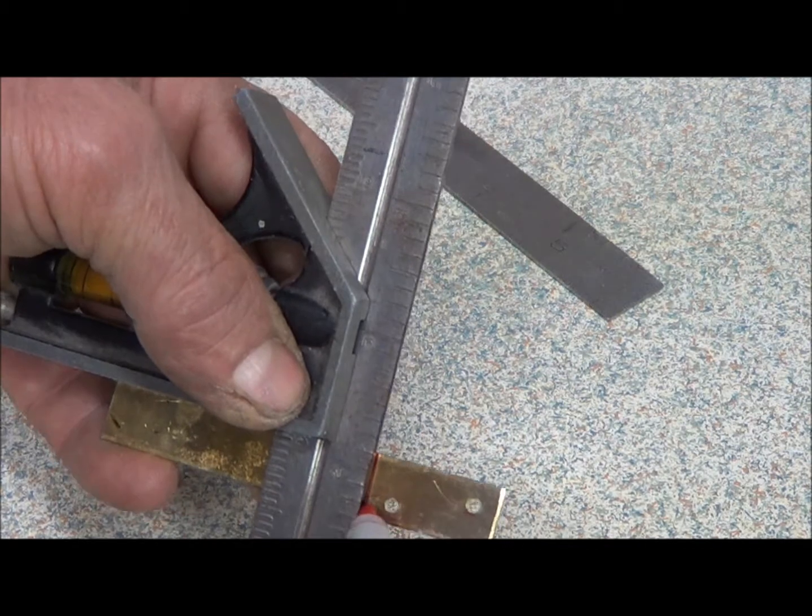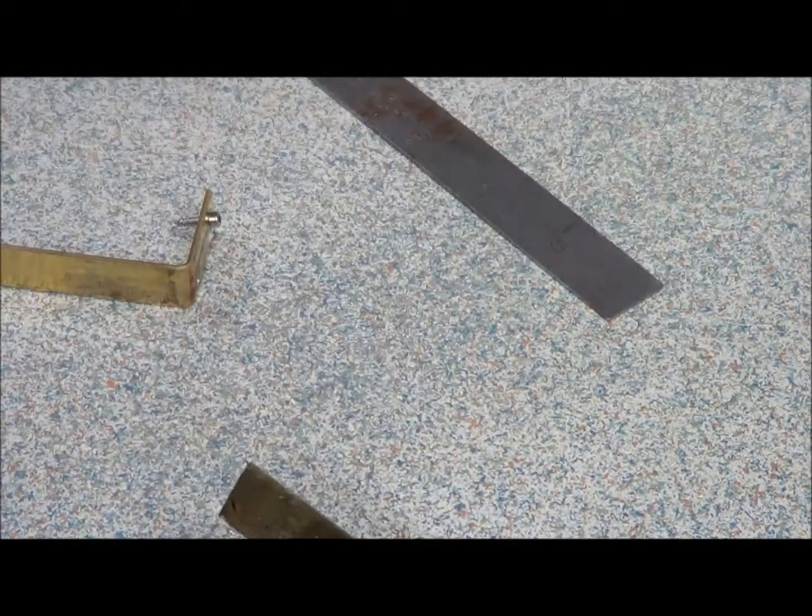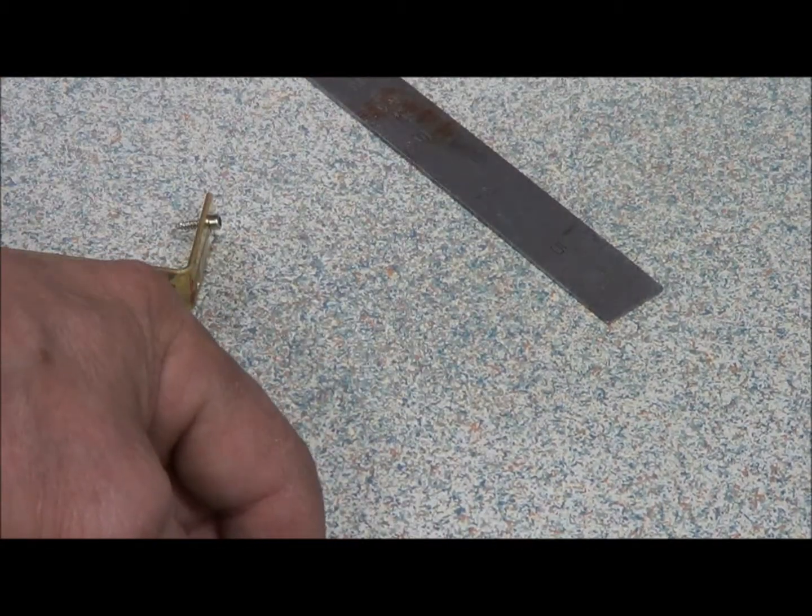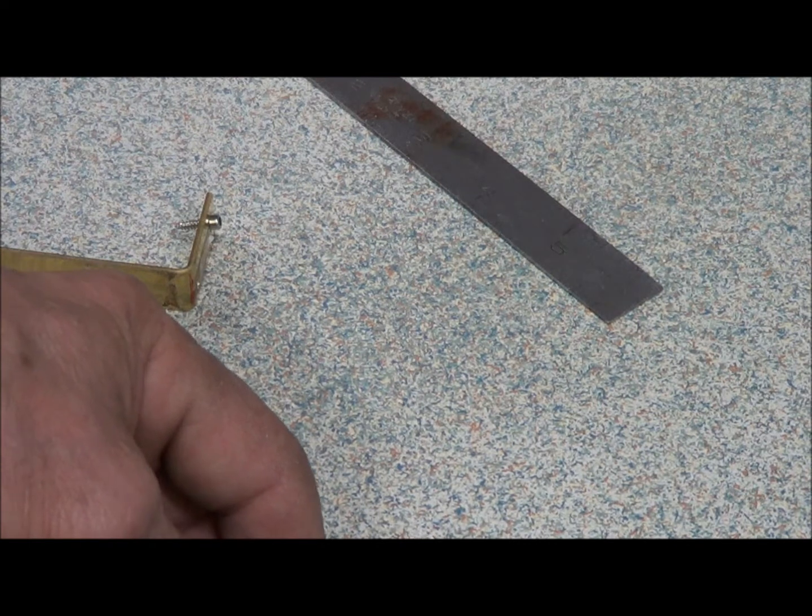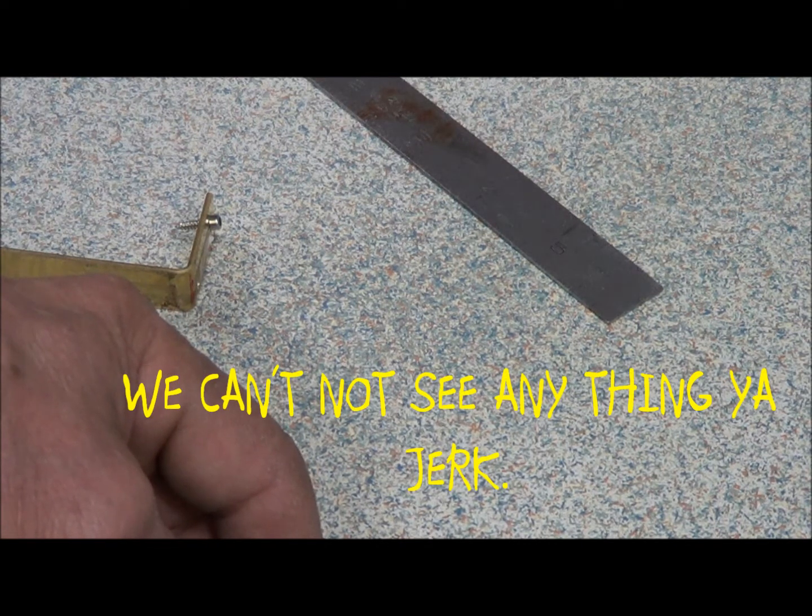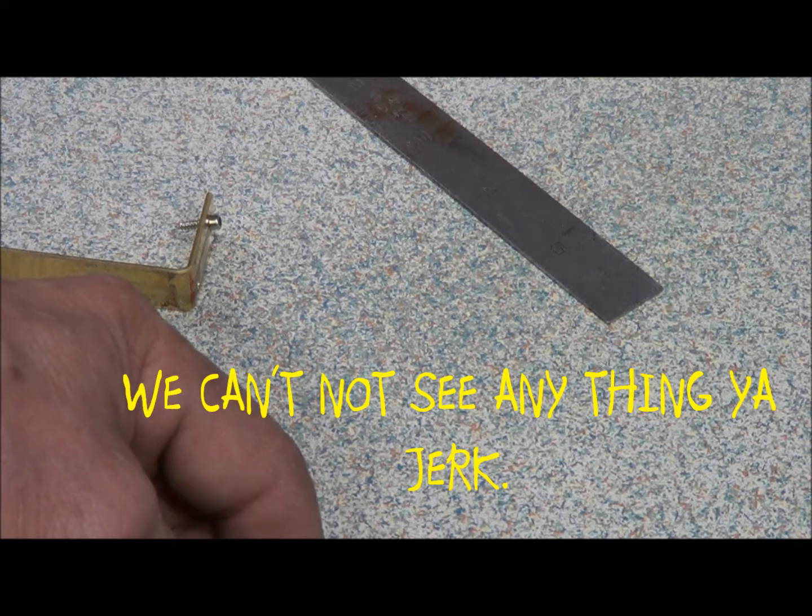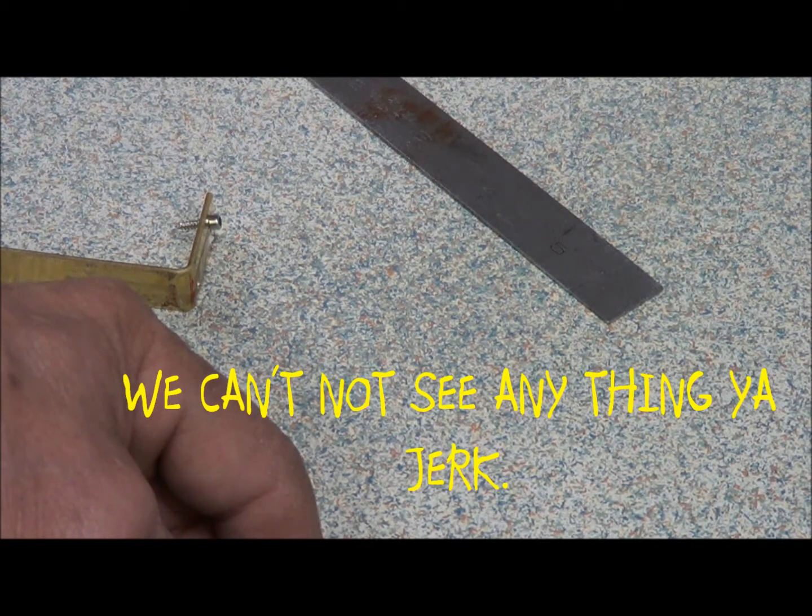Make a mark so I know it's straight, and then I'm just kind of eyeballing centers. I'm offsetting these so I don't split the wood. If you put them straight in line, you got a good chance of splitting the wood, even though you pre-drill with a smaller drill to start with.